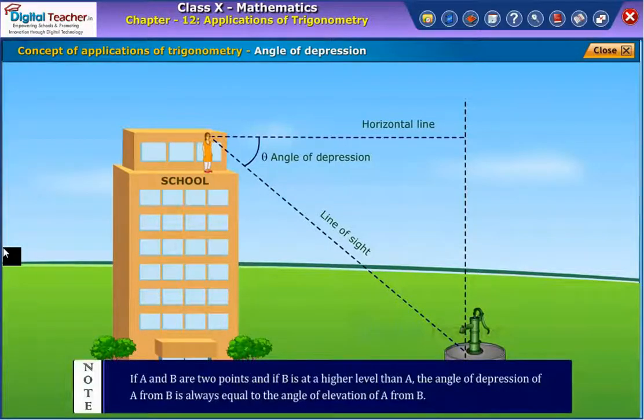Note that if A and B are two points and if B is at a higher level than A, the angle of depression of A from B is always equal to the angle of elevation of A from B.